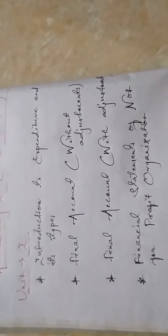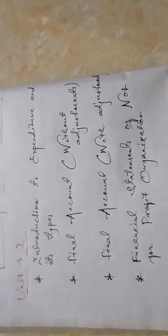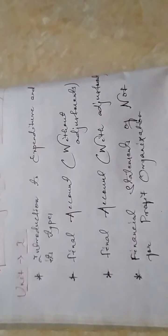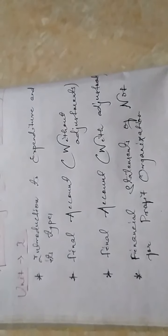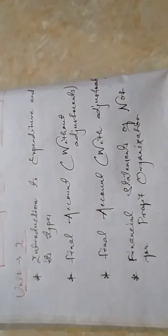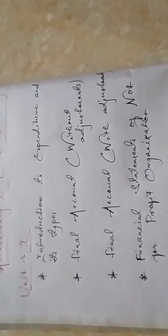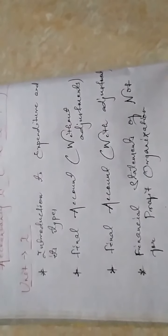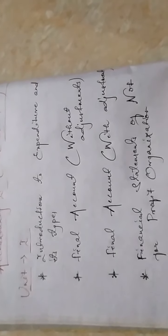We will be discussing final account, and before that let us look at the full course. The two parts of final account are without adjustment and with adjustment. The last chapter of the first unit is financial statements of not-for-profit organizations, also called non-trading or non-profit making organizations. We shall discuss and distinguish between these three terms when we come to that chapter.